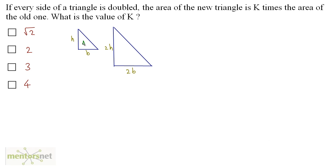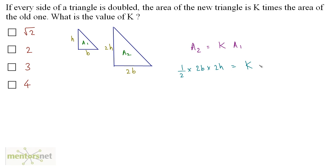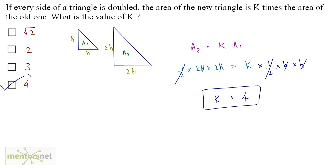Let the original triangle have area A1 and the new one area A2. Since the new area equals k times the old area, A2 = k × A1. Now A2 = ½ × 2B × 2H. Simplifying, the halves cancel and BH cancels, leaving k = 2 × 2 = 4. So the value of k is 4. Option D.